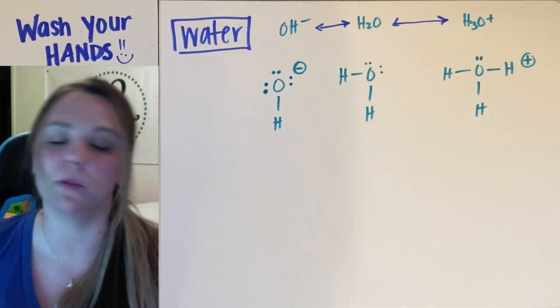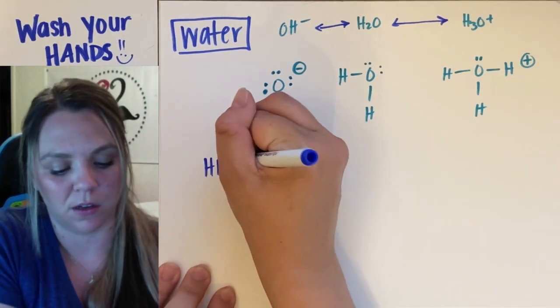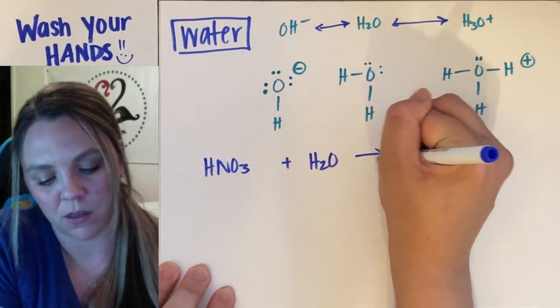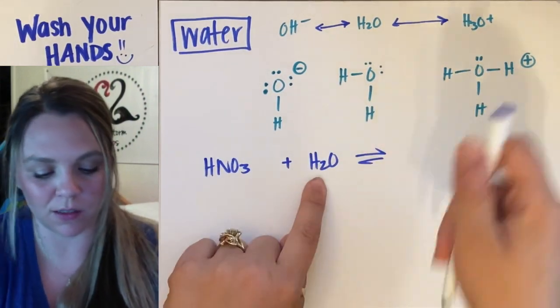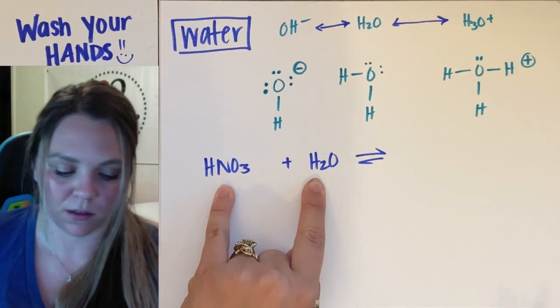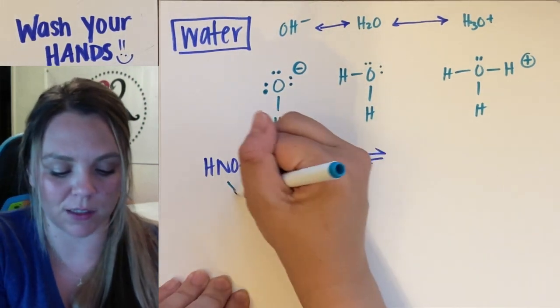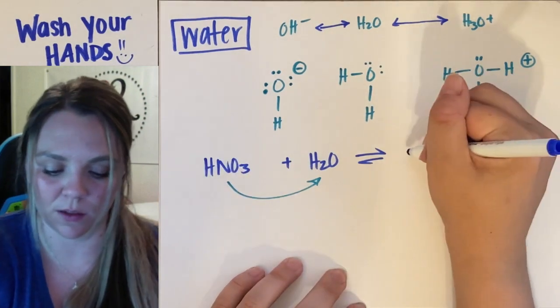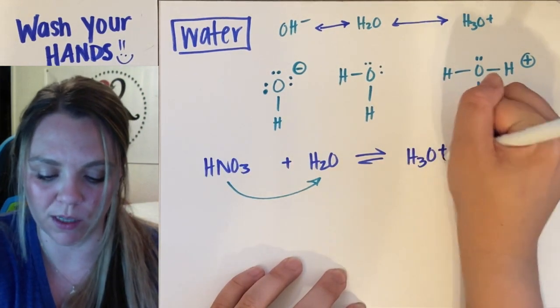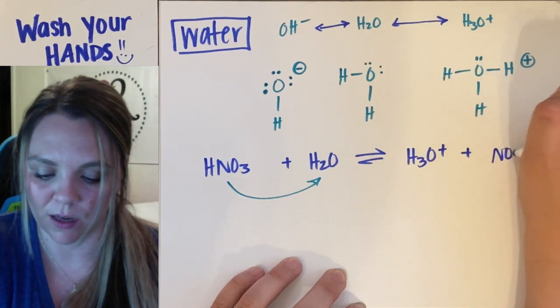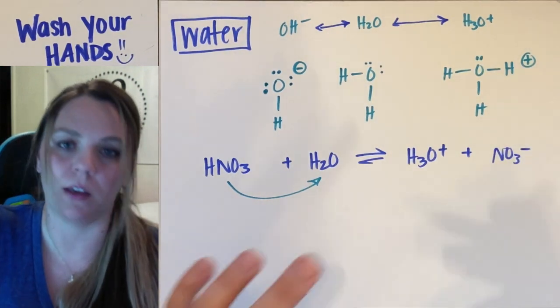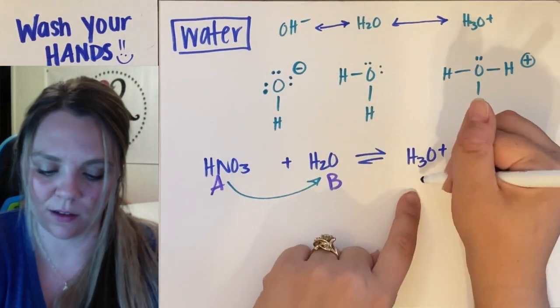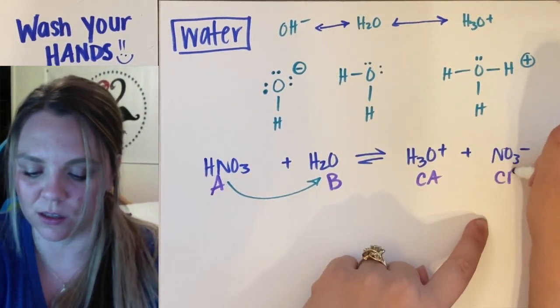And in two different examples for you, just so we can see it, in this case, water with nitric acid. Well, nitric acid is going to donate the hydrogen, so water would accept. And this will become H3O plus, plus NO3 minus. And just so we make sure we know, this would be the acid, the base, the conjugate acid, the conjugate base.